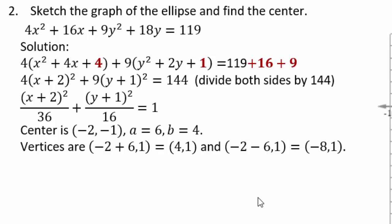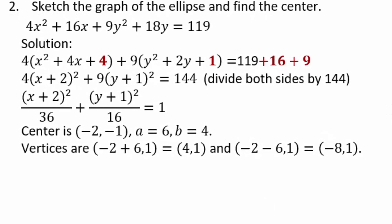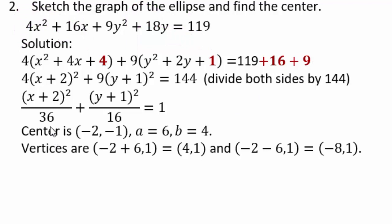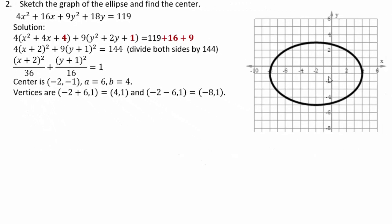For number 2, complete the squares: factor 4 out of the x terms and 9 out of the y terms. Half of 4 is 2, 2² = 4; half of 2 is 1, 1² = 1. But you're really adding 4×4 = 16 and 9×1 = 9 to the right-hand side. This gives 4(x+2)² + 9(y+1)² = 144. Dividing by 144 puts it in standard form: center (−2, −1), a = 6 going left and right, b = 4 up and down.